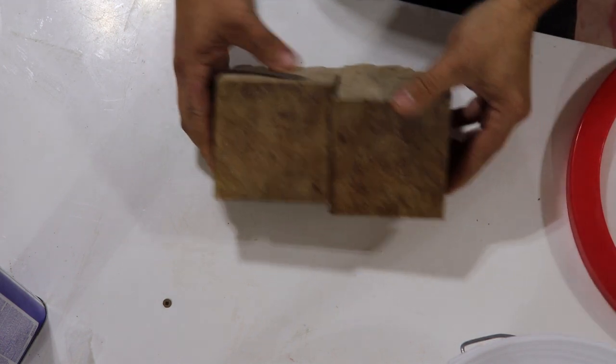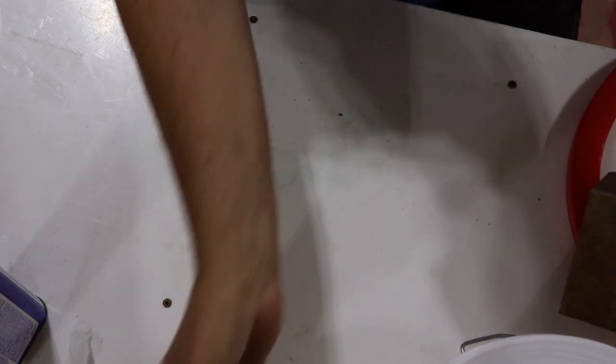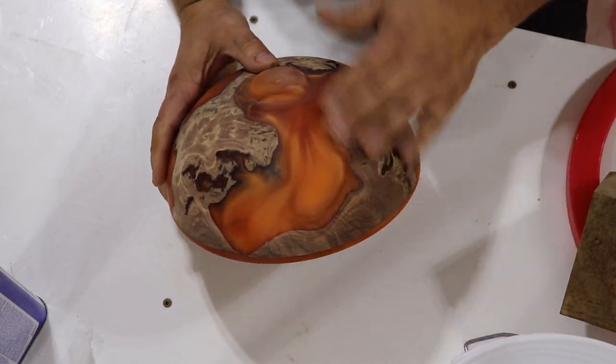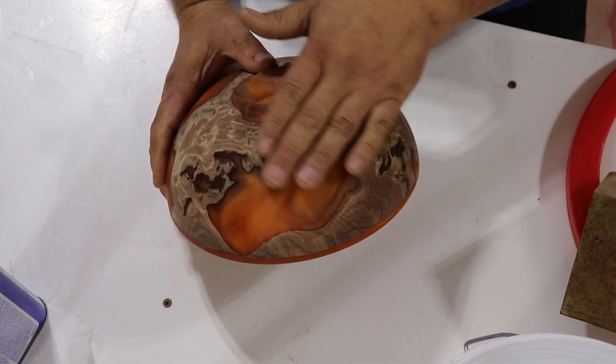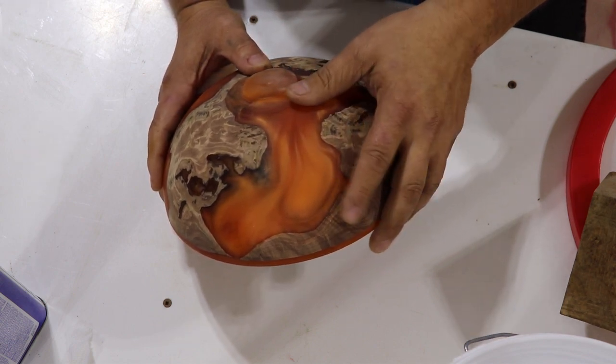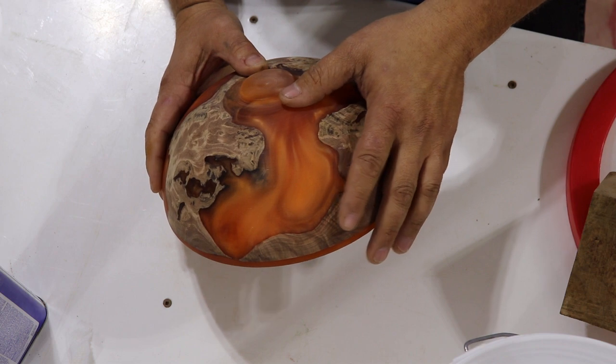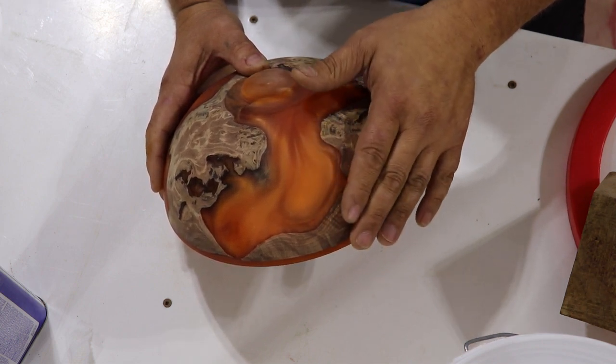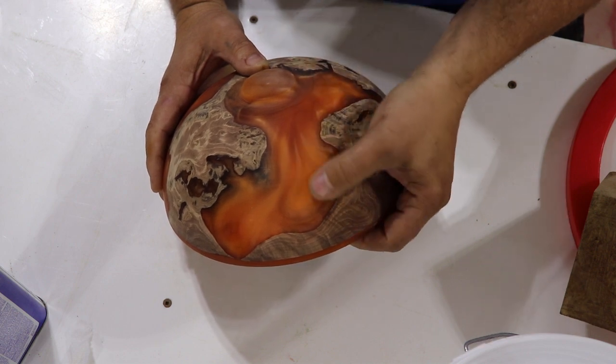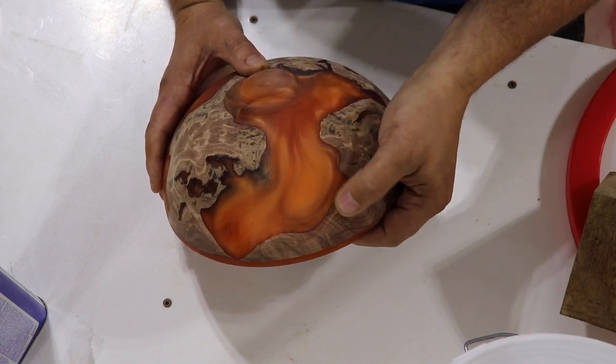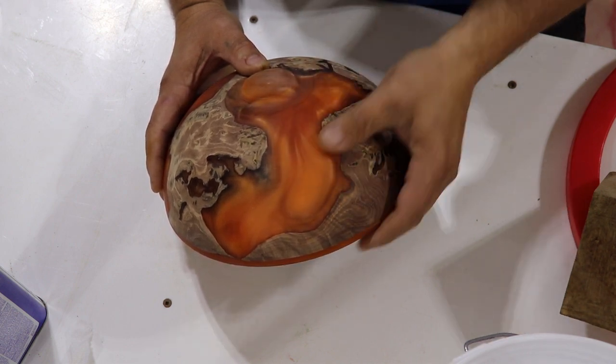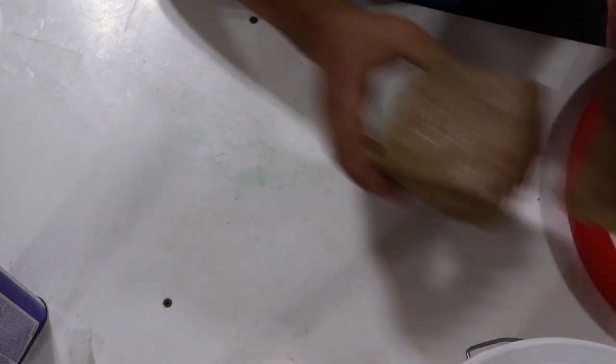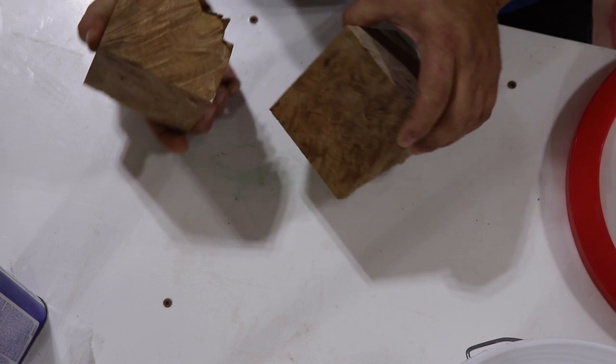I'll show you why I do that. This is a blank of resin and maple burl, this is local maple burl. When it comes off the lathe you cannot feel the transition between the burl wood and the resin, but as it takes on moisture the wood will expand a little bit and the resin doesn't take on any moisture, so you can feel this transition. I don't want that, so I stabilize these burls so they will not move and they'll have the same properties as the resin.